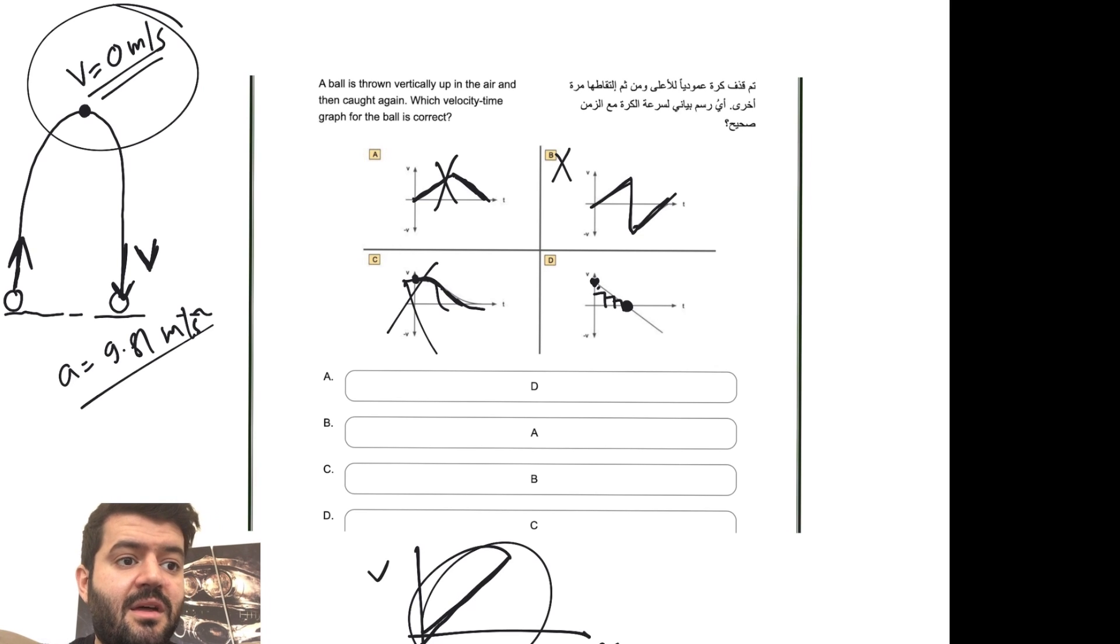We have the following case where the velocity is zero, then the velocity keeps on changing the direction. Now we are increasing but in the negative side, which is the case right here. We have the velocity decreasing as we go up, flips, then starts to increase as we go down, which is clearly represented by the following case.